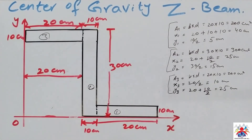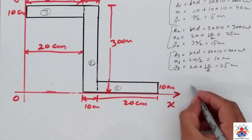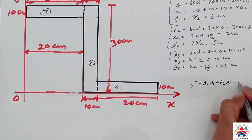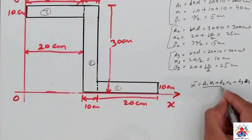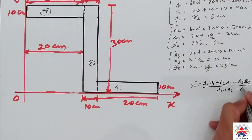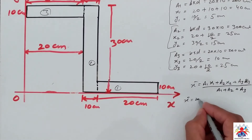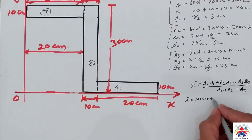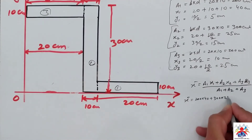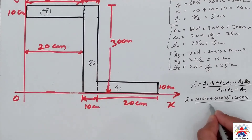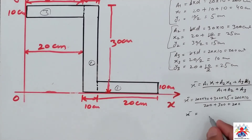Now we put the values into the formula. X-bar equals (A1·x1 + A2·x2 + A3·x3) divided by (A1 + A2 + A3). Substituting: (200 × 40) + (300 × 25) + (200 × 10), divided by (200 + 300 + 200). The value of x-bar is 25 centimeters.